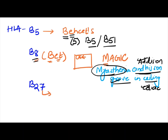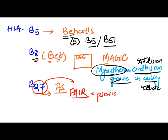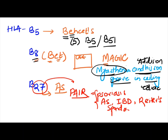Then we have B27, which is the most frequently and commonly asked. We all know it is associated with ankylosing spondylitis. The other conditions associated with B27 are remembered by the mnemonic PAIR — 27 is the age when you get married and become a pair. PAIR stands for Psoriasis, Ankylosing spondylitis, Inflammatory bowel disease, and Reactive arthritis (Reiter's). These are all spondyloarthropathies associated with HLA-B27.